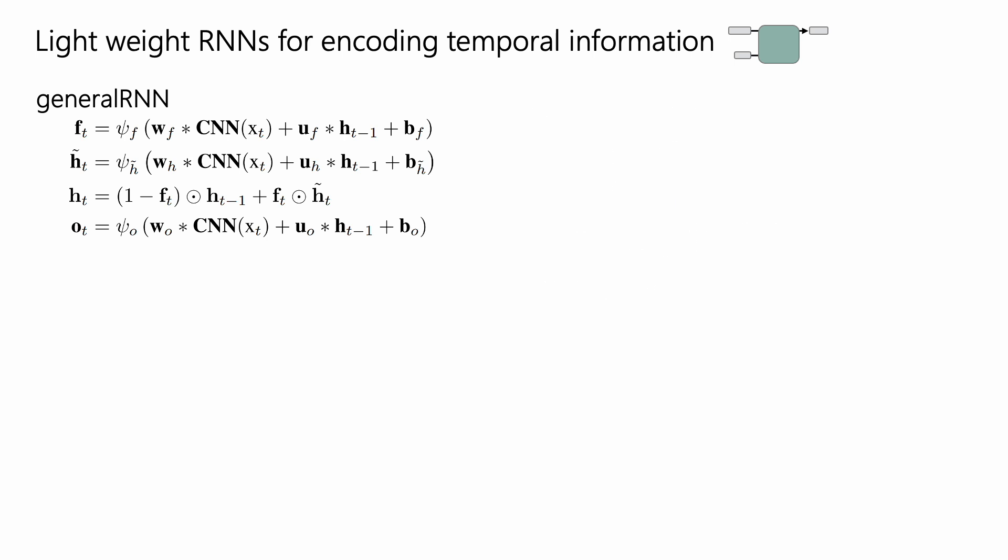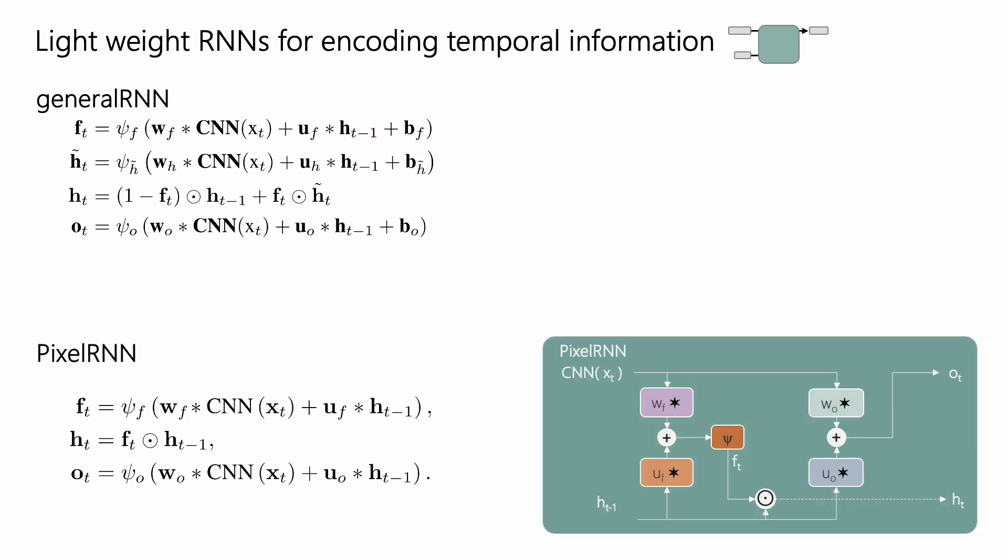To enable on-sensor implementation, we operate in the binary setting. In this case, general RNN simplifies to what we call pixel RNN. As we output just once every 16 time steps, this gives us an additional 16x bandwidth reduction.